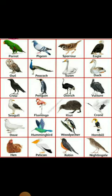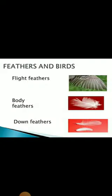Here you can see in this picture some different types of birds. You can see that these birds are different from one another. Birds have feathers, which is why they are able to fly. Their body is covered with feathers. They have two wings and two scaly legs with claws.